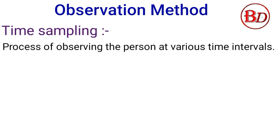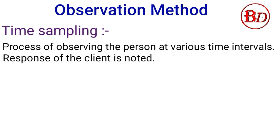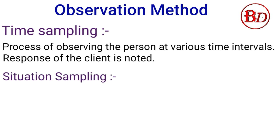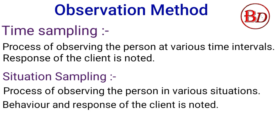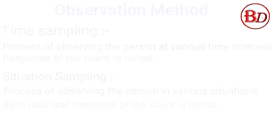Time sampling is the process of observing the person at various intervals — the response of the client at different time intervals is noted. Situation sampling is the process of observing the person in various situations — the psychologist notes the behavior and response of the client in various environments.